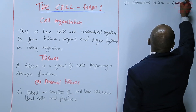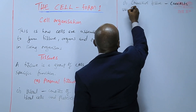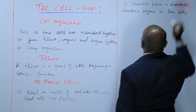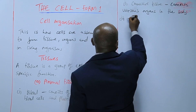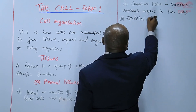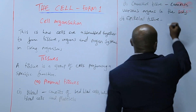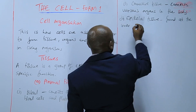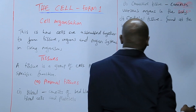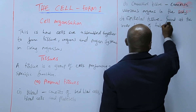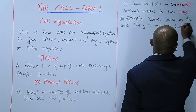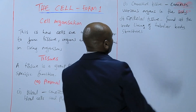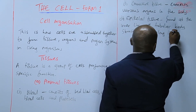We have connective tissue, and this is the one that connects various organs in the body. We also have epithelial tissue. These are animal tissues, and this one is found at the inner lining of tubular body structures, for example along the digestive system.